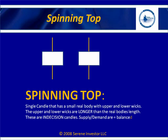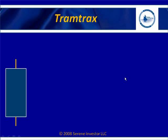A spinning top has a small body with upper and lower wicks about equidistant, and the upper and lower wicks are longer than the real body — that's important to know. You don't want really tiny wicks. Supply and demand are balanced — buyers and sellers are meeting each other equally.